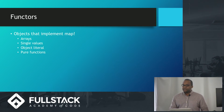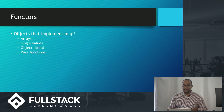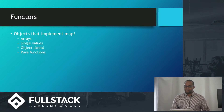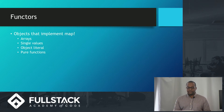So, functors. In the very simplest term, functors are objects that can implement map. That's pretty much all they are. So arrays — you could implement map on them — single values, object literals, and pure functions. As long as you can map it, you could basically call it a functor.